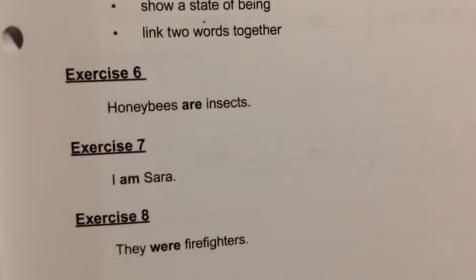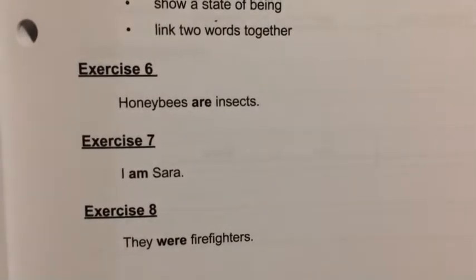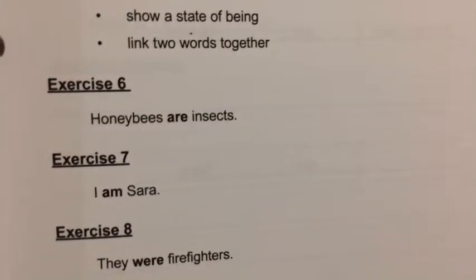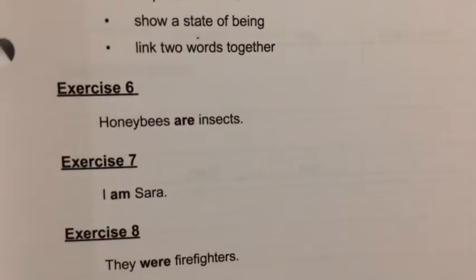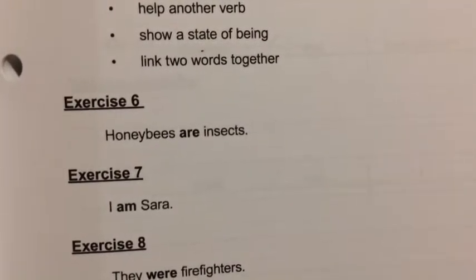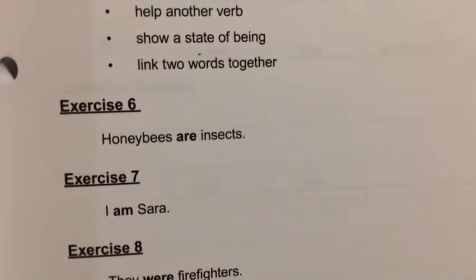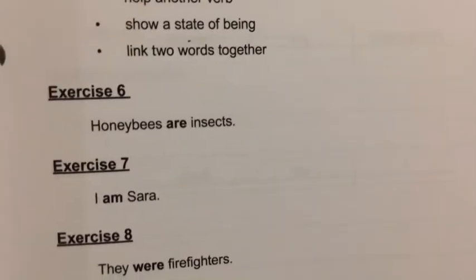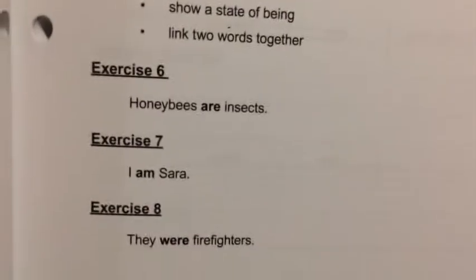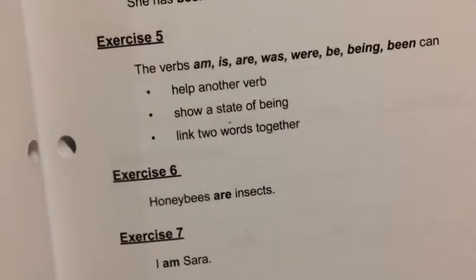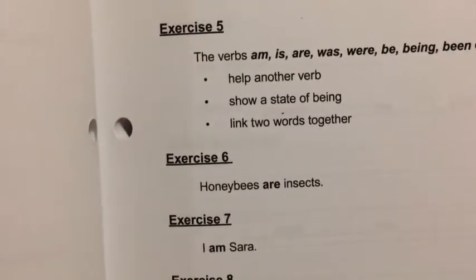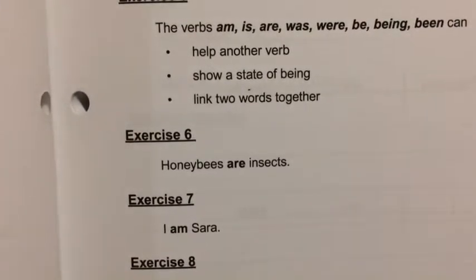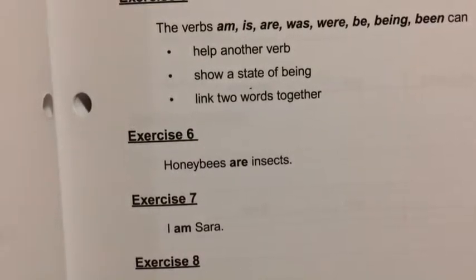Look at exercise six. Verbs that link two words together are called linking verbs. When you're linking hands with somebody, you're connecting one thing to another — links in a chain connect things together. Look at this sentence: Honeybees are insects. Are is a linking verb in this sentence, and the linking verb are links the subject, honeybees, with a noun — insects.